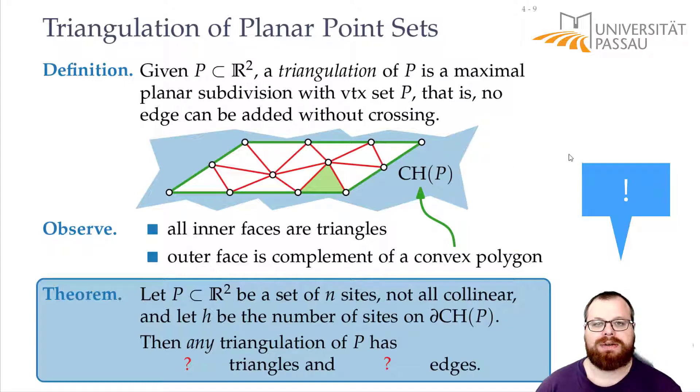And we have h vertices on this outer face. How many edges would we have to add such that this also becomes a triangle, such that all the faces become a triangle?